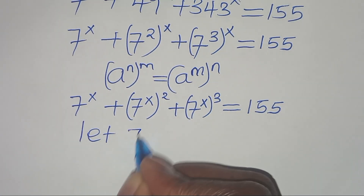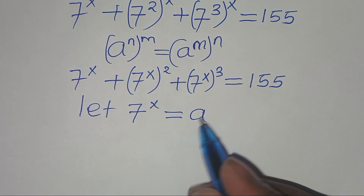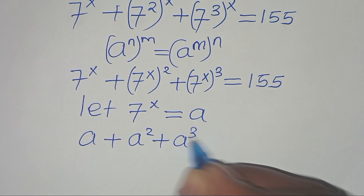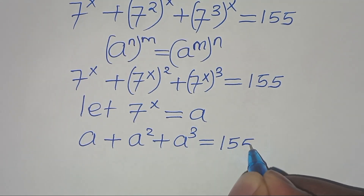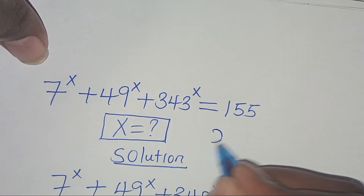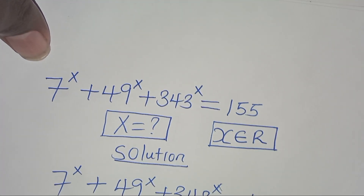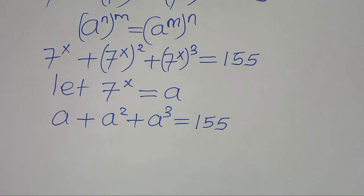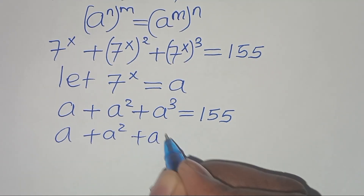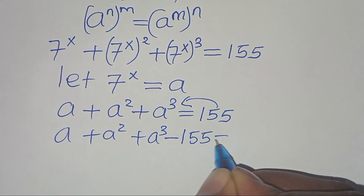From here we can say: let 7 to the power x be equal to a. Substituting a, we have a plus a squared plus a to the power 3, this is equal to 155. Given that x is a member of the real numbers, this implies a plus a squared plus a to the power 3 minus 155 is equal to 0.